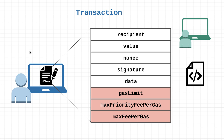The data field is an optional field used to include arbitrary data. It's used primarily when calling smart contracts, because it can indicate which functions to run and which parameters to use. You don't use it much when making a transaction to another EOA — you can include data, but it's really just ignored by the Ethereum protocol. So remember, the data field is going to be used whenever we are sending transactions to smart contracts.